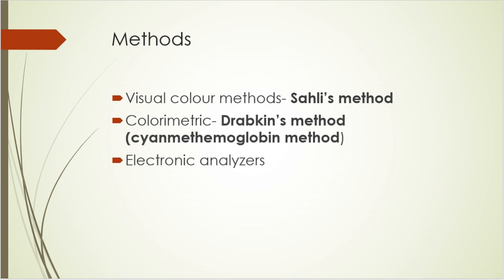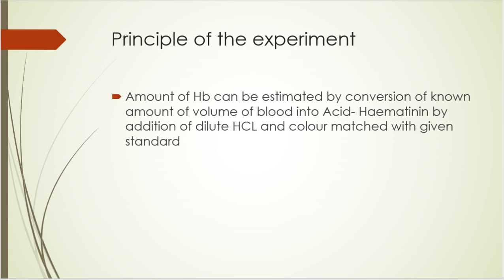There are also electronic analyzers which are used in casualty setups and emergency setups where the number of samples is very high. In this video, we'll be talking about Sahli's method only. Coming to the principle of Sahli's method: the amount of hemoglobin can be estimated by conversion of a known volume of blood into an acid hematin compound by addition of dilute HCl, and the color is matched with a given standard value. That is the principle - basically, formation of an acid hematin component because of dilution into HCl.